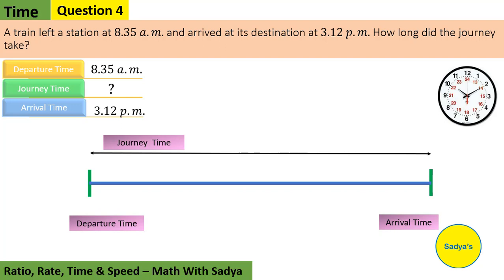We will use the timeline method. We write departure time here at the start of the timeline, which is 8:35 a.m. Journey time we have to write here, which we have to find. And arrival time we write at the end of the timeline, which is 3:12 p.m.